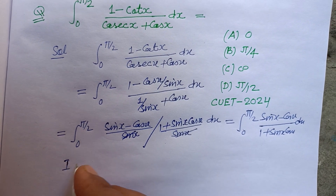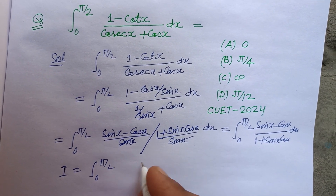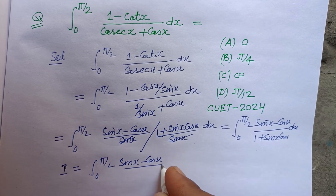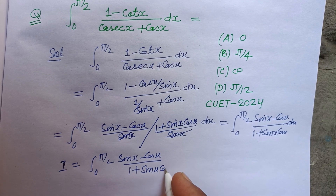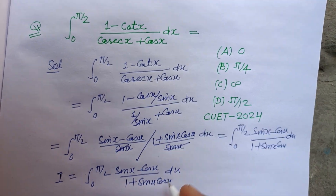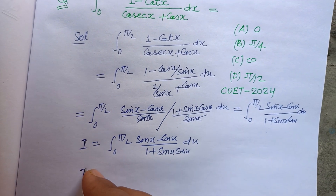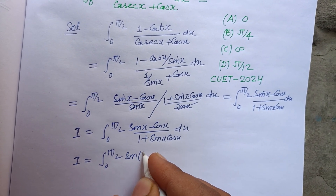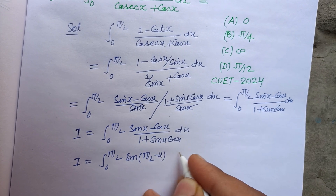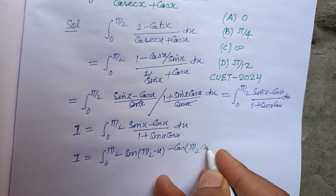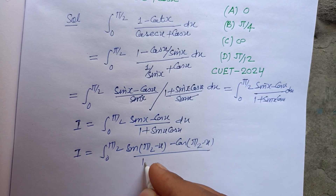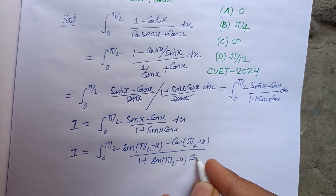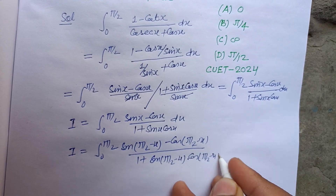Now let I equal the integral from 0 to π/2 of (sin x - cos x) / (1 + sin x cos x) dx. Applying the property, we substitute x with π/2 - x: sin(π/2 - x) minus cos(π/2 - x), over 1 + sin(π/2 - x) · cos(π/2 - x) dx.